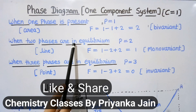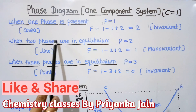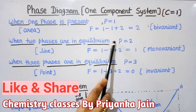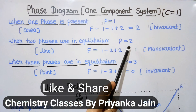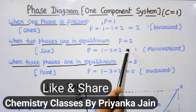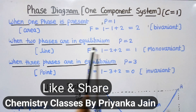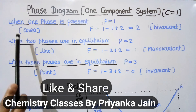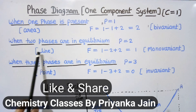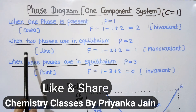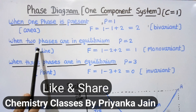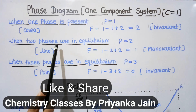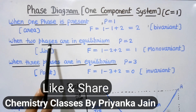When two phases are present in equilibrium — such as liquid and vapor — there are two phases and the component is 1, so the degree of freedom will be 1. It means the system is monovariant. The equilibrium between two phases is shown by a line. At this line, two phases are simultaneously present in equilibrium, and for each pressure there is a single corresponding temperature.